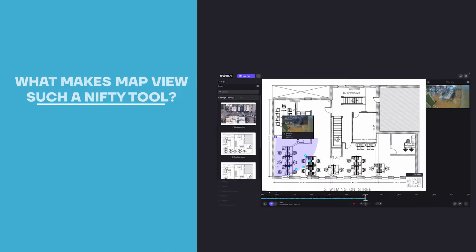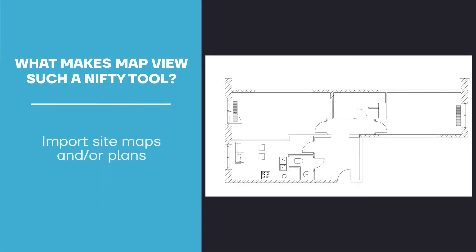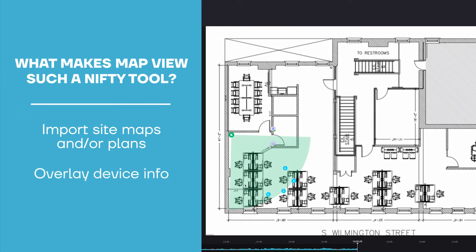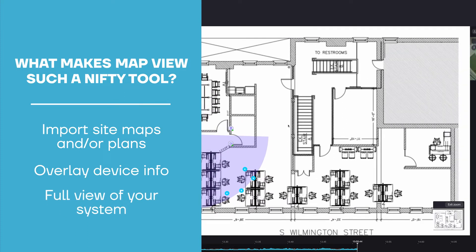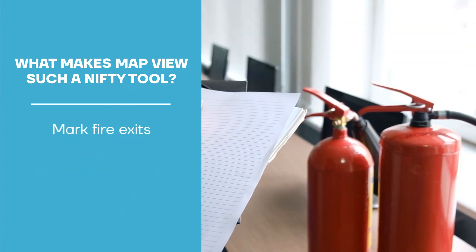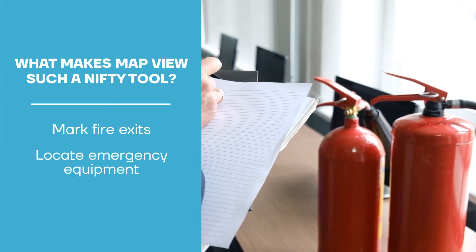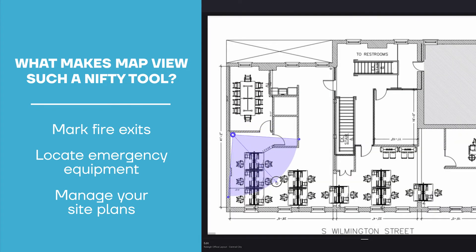What makes Map View such a nifty tool for you? With your custom Map View, you can now import site maps and plans into AWARE, overlaying information about your cameras, their fields of view, and other important information about your site. You can identify the fire exits, locations of emergency equipment, sensitive areas, and other important features. You can link several smaller plans together to form a complete and detailed view of your premises.